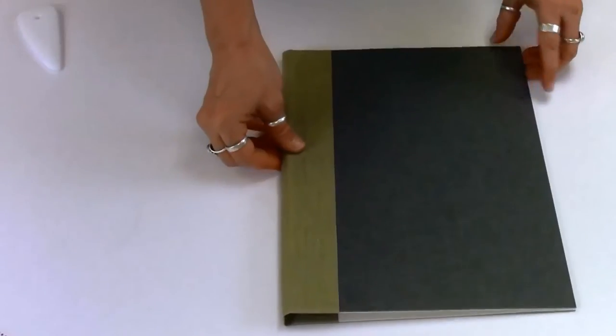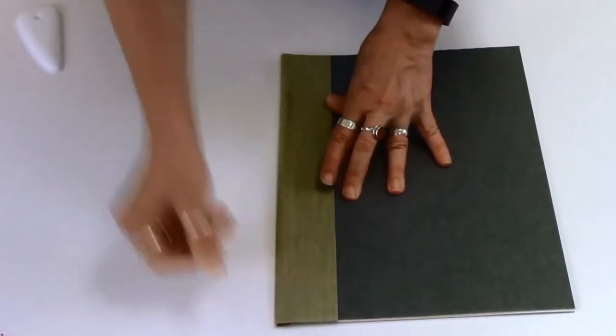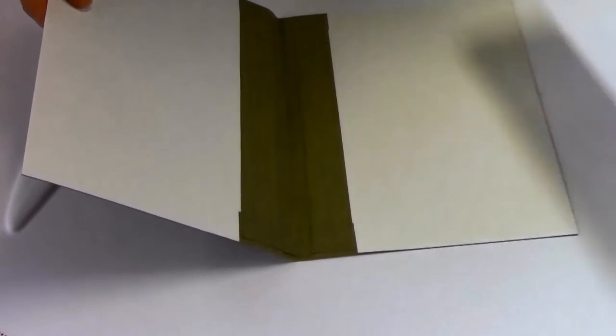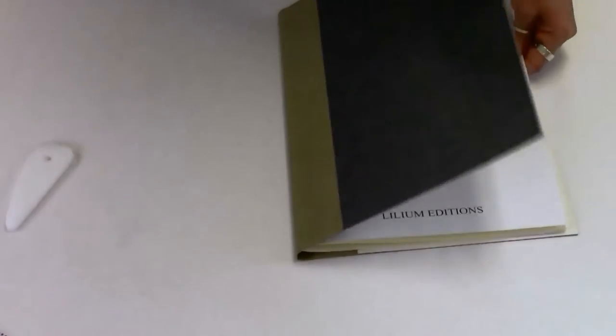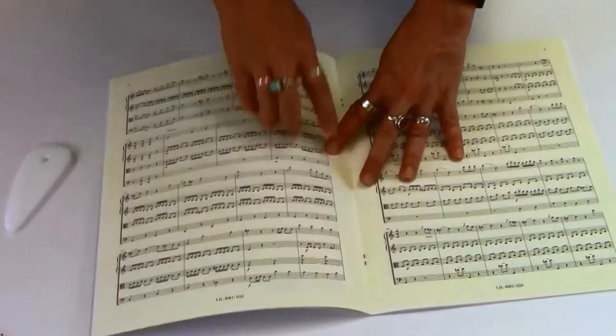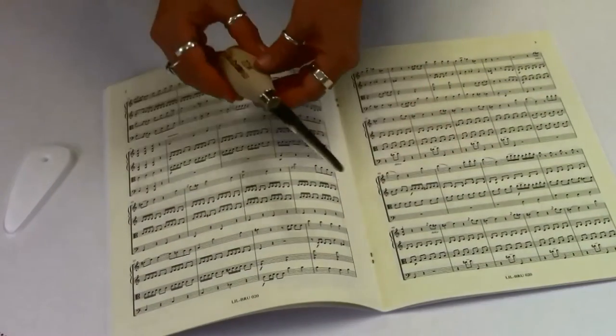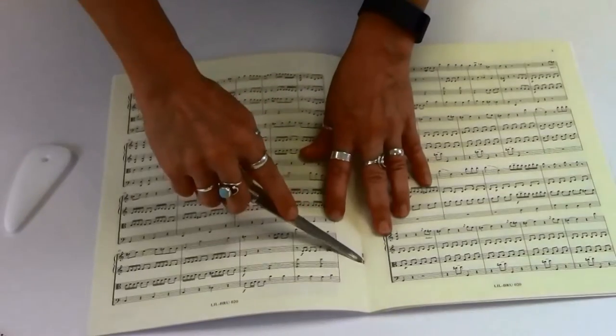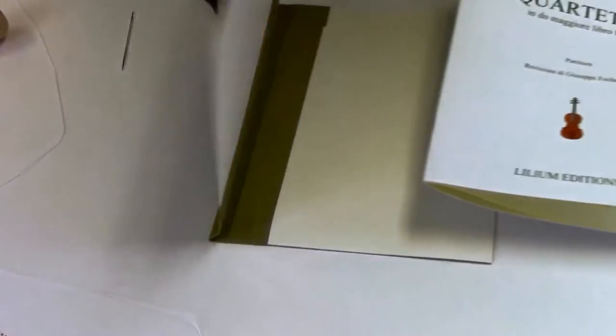The final steps for finishing this technique will be sewing the pamphlet into the cover. Remove the staples from the pamphlet and make the holes for sewing. The pamphlet style requires five holes, which you will make with an awl or a thick needle.